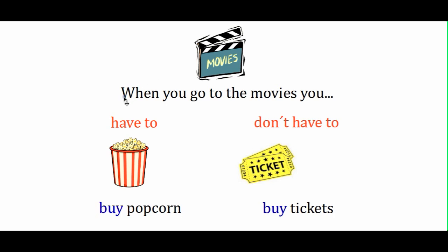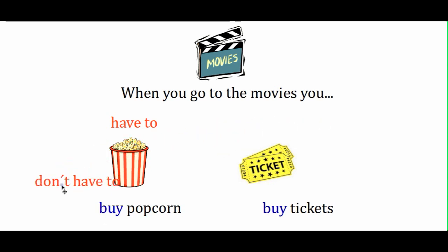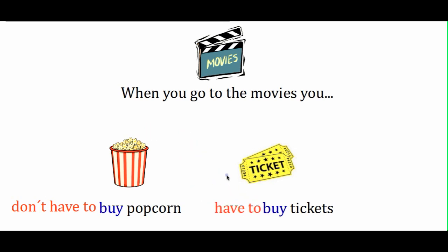Next example: when you go to the movies, you have to or don't have to — modals of obligation. Options: buy popcorn, and buy tickets. When we go to the cinema, do we have to buy popcorn? No — it's just an option. So: 'When you go to the movies, you don't have to buy popcorn.' But tickets: there is no choice — it's an obligation. 'When you go to the movies, you have to buy tickets.'